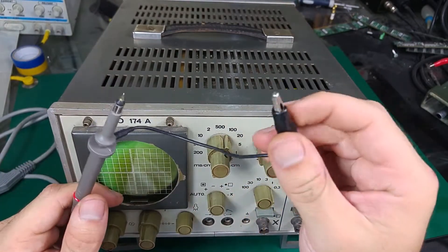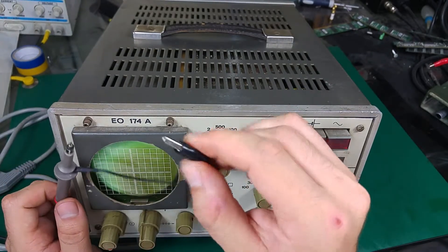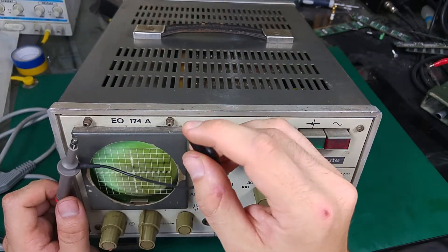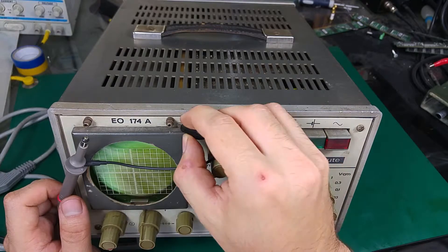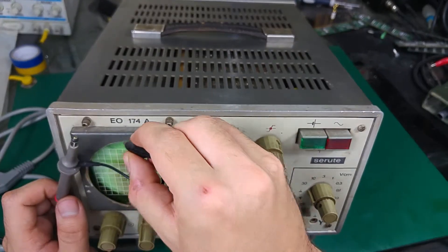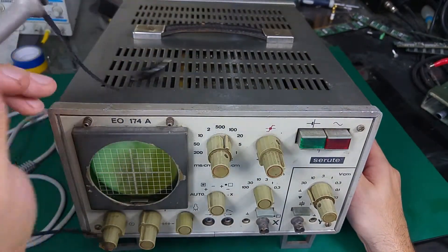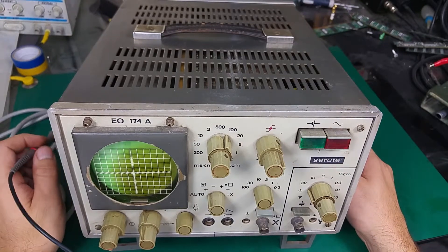accidentally do a measurement across that ground clip and it goes shorted to the hot wire on your device under test, you are going to blow up and make a short circuit. So you have to be extra careful.